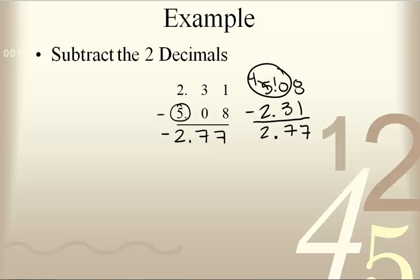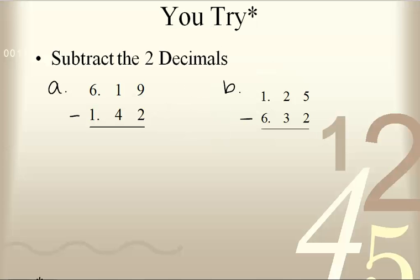So that's the example for subtracting decimals. The you-tries are A, part A is 6.19 minus 1.42, and B is 1.25 minus 6.32.